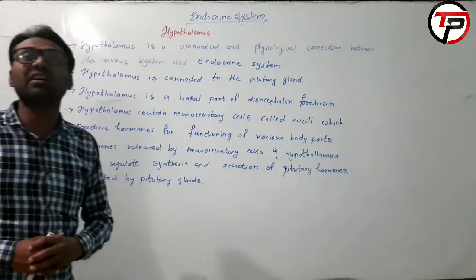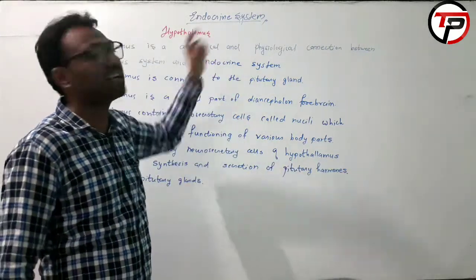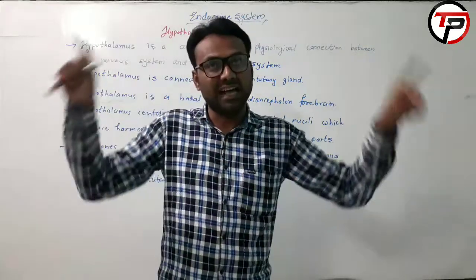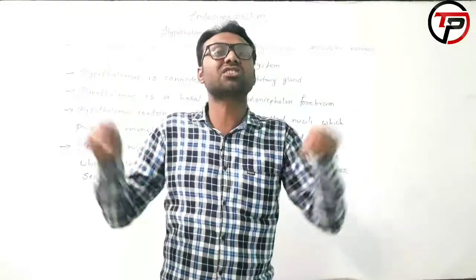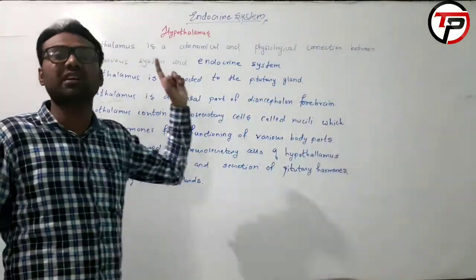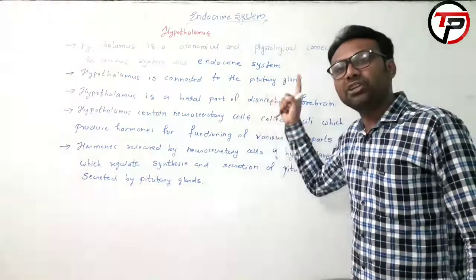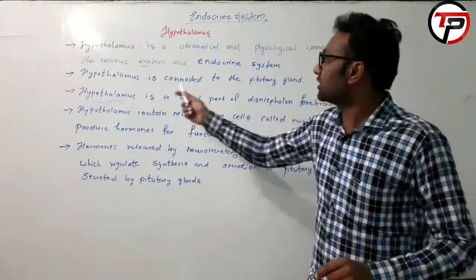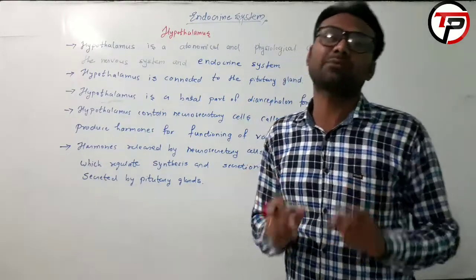Hypothalamus is connected to the pituitary gland. In the next video we will cover the diagram, labelling, and secretions of the pituitary gland. The hypothalamus is connected to the pituitary gland, which is essential for secreting all types of hormones.